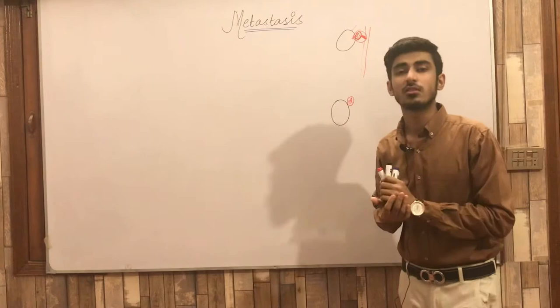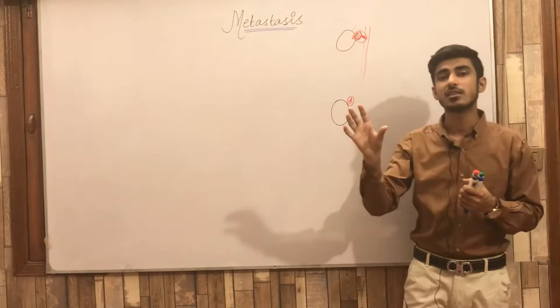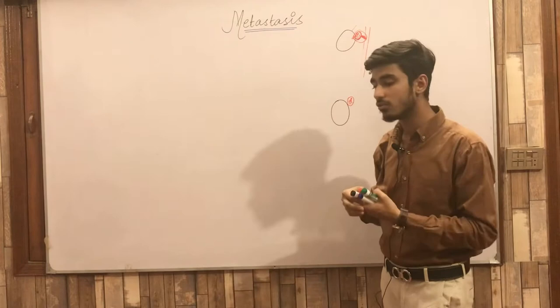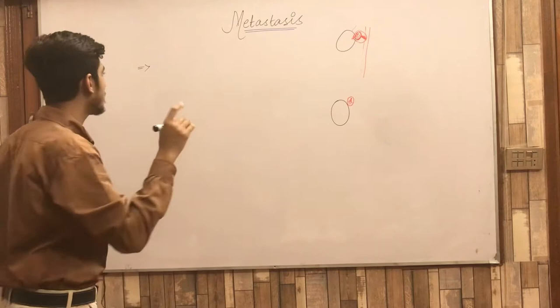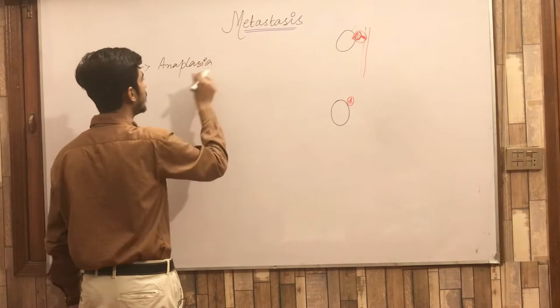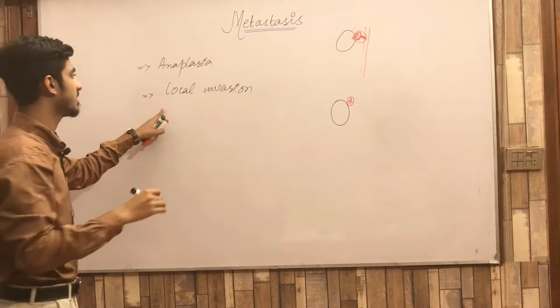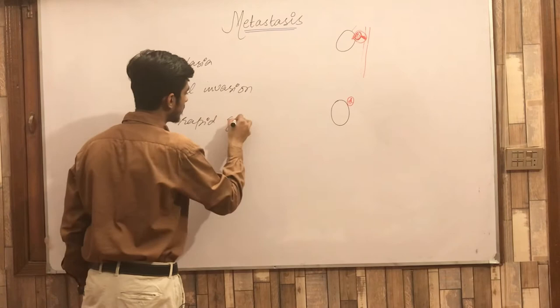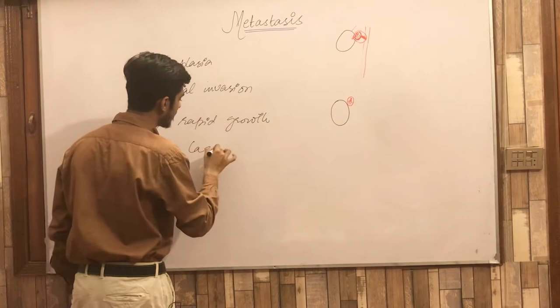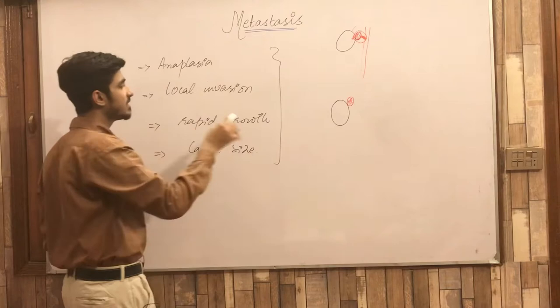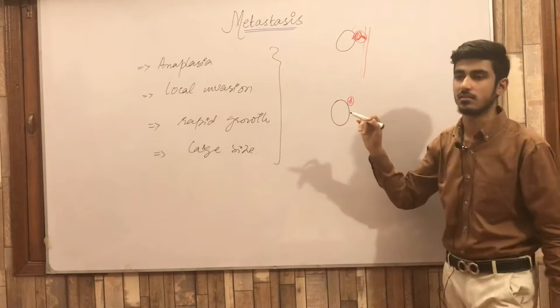In primary tumours, we have identified certain features that, if present, indicate the primary tumour is likely to cause metastasis. These features are: first, anaplasia — meaning lack of differentiation; second, local invasion; third, rapid growth; and fourth, large size. If a primary tumour has these characteristics, it is probable that it will carry out metastasis.